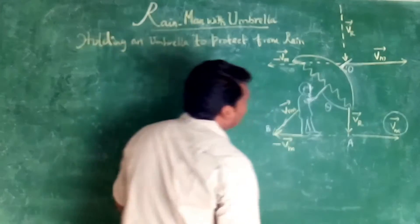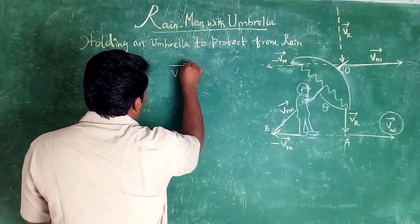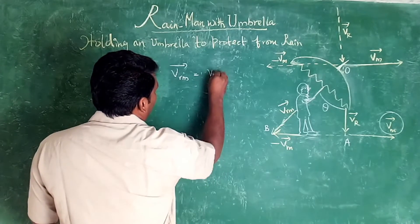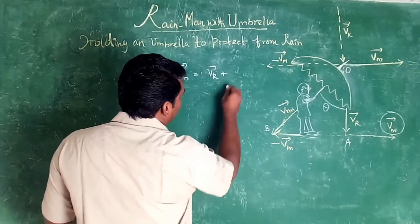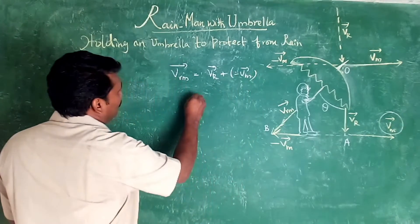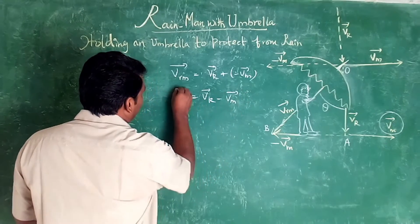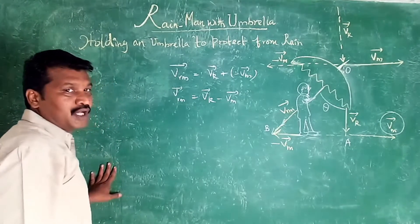This is the opposite side. Now Vrm equal to Vr minus Vm. Vr minus Vm.